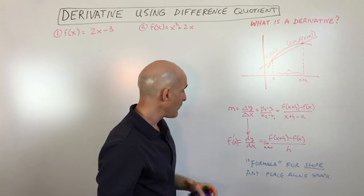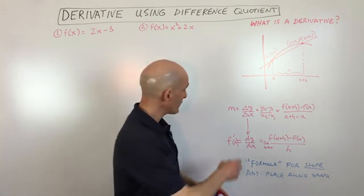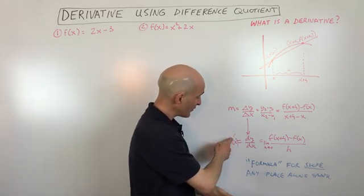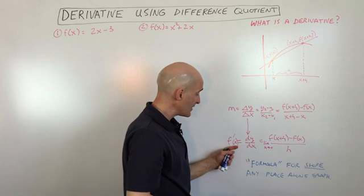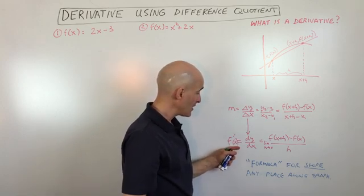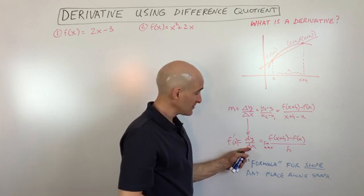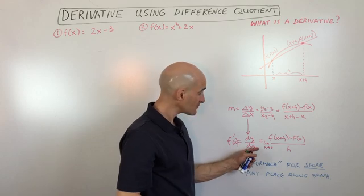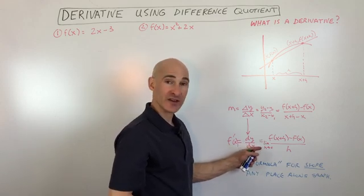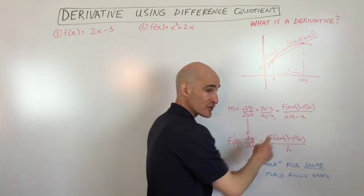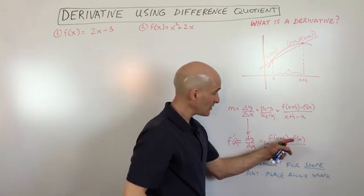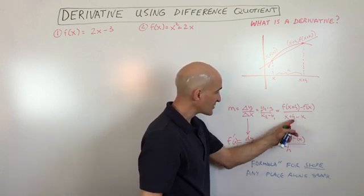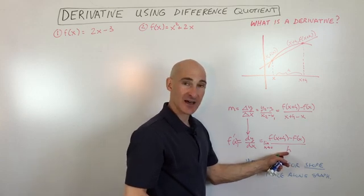Now we're going to change the notation up a little bit. Instead of writing m for the slope, we're going to write f prime of x. This little apostrophe — f prime — is actually the derivative. Sometimes it's written as dy/dx, where dy is like delta y, the change in y over the change in x. And you can see here this x and the negative x cancel out, just leaving us with h in the denominator.